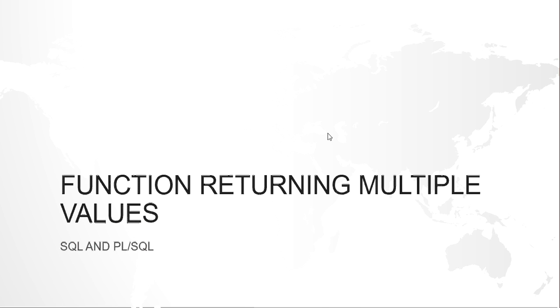Hello guys, my name is Kishan and today we are going to look at how a function can return multiple values. As we know, a function would definitely return a value to its calling environment. What if we want more than one value to be returned?